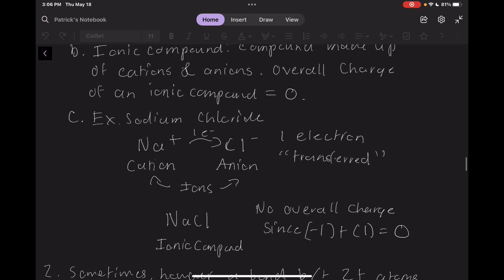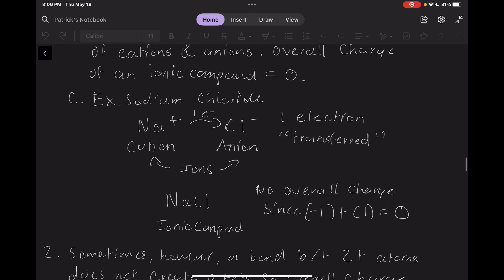Here we have one of the most well-known ionic compounds, sodium chloride. Sodium loses one electron and becomes a cation with a charge of positive one, and chlorine gains said electron and becomes an anion with a charge of negative one. When the sodium cation and the chlorine anion become sodium chloride, the charges cancel.